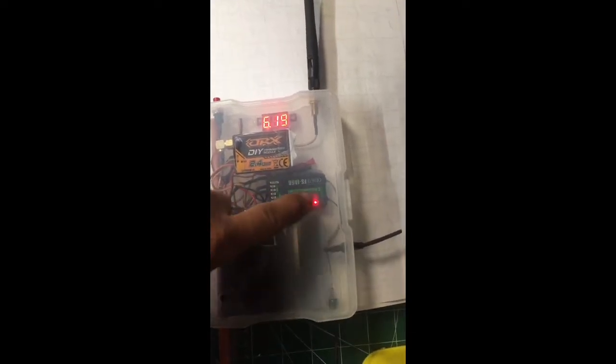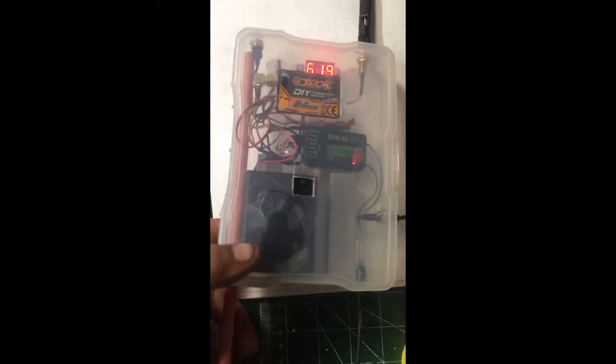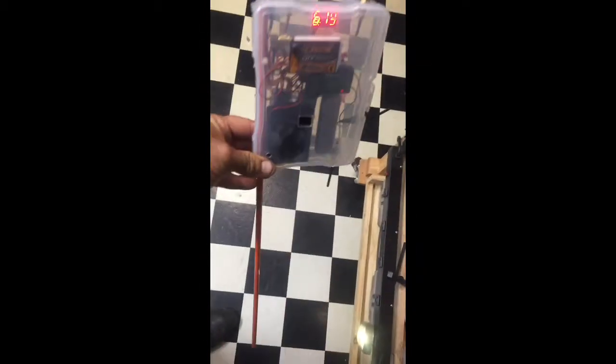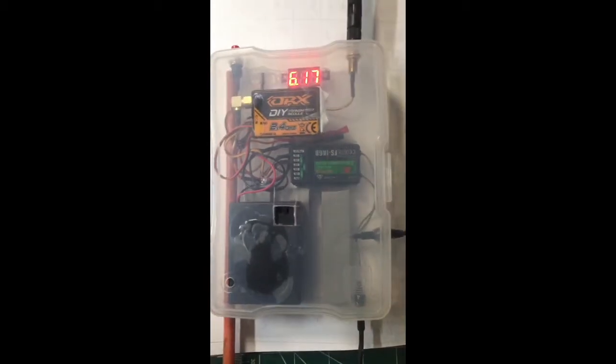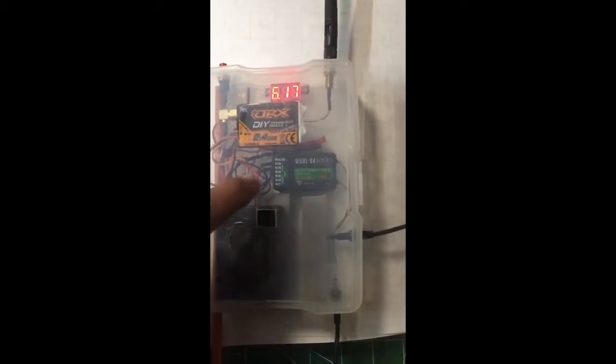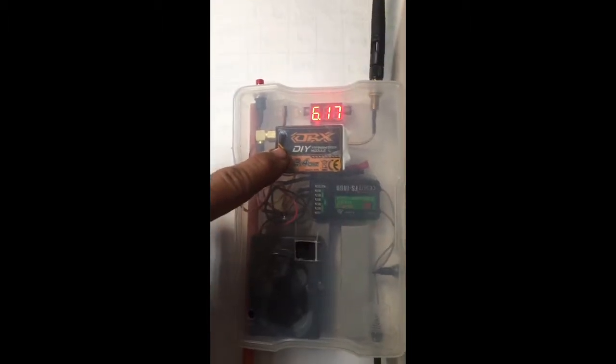The FlySky transmitter transmits to this receiver, which is stuck in the ground at the field. You can put it in the middle of the field or 20 feet in front of you, it doesn't matter. And then from there, the PPM signal gets taken up with this orange receiver do-it-yourself module.